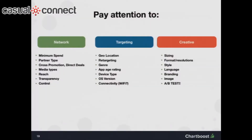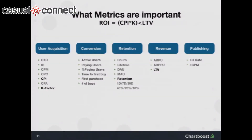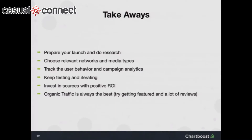You have to pay attention to minimum spend, and it's also very important to look at transparency and control as an advertiser — where do you show your ad and how are you able to optimize? Targeting by devices and geolocation are very important, and you also need to be able to A/B test your creatives. In the end, it's about this: if your CPI times the K factor is lower than your lifetime value, you're making a profit. That's what you want to do as a game developer anyway.